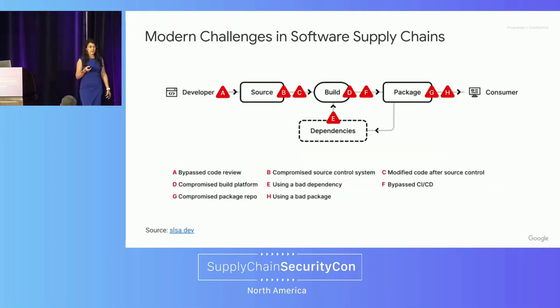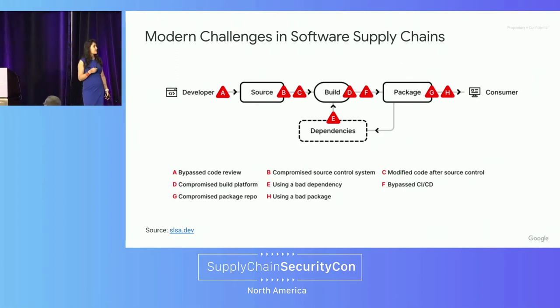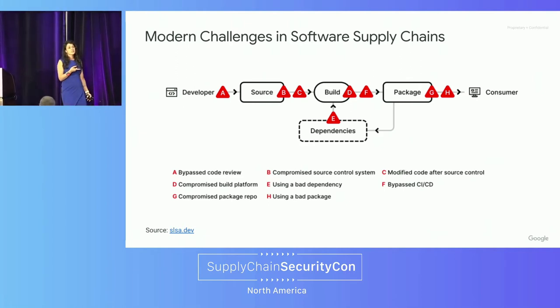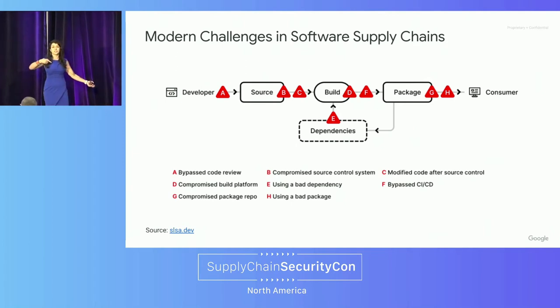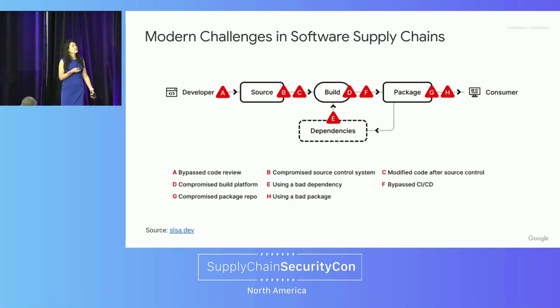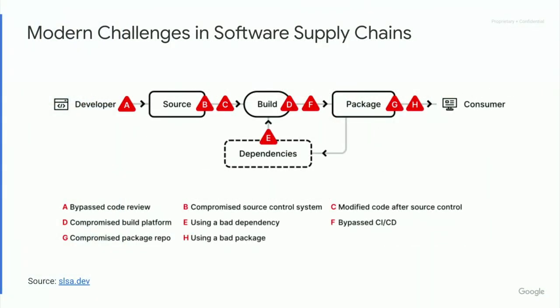Here's the diagram from the SALSA website, which you already saw in the premiere of Operation SALSA. It shows the software supply chain from source, then it gets built with dependencies pulled in, packaged and shipped to the customer — whether it's a container image, binary, and so on. As you can see here, every step of the way there are multiple attack vectors that make it very problematic for us to ensure that what we're running is what we intend on running, and it has everything we need and nothing else in it.